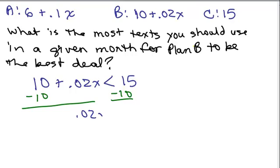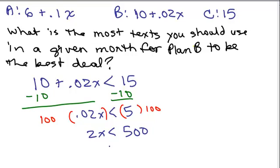That's 0.02x equals 5. And I'm going to multiply both sides by 100. You could do this with a calculator if you want. If I multiply both sides by 100, I'm going to get 2x is less than 500. So x is less than 250 texts.